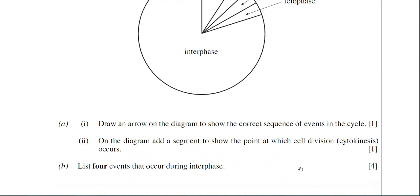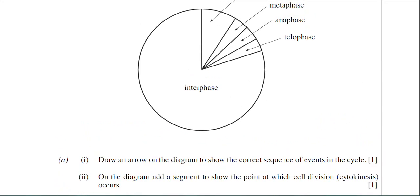Next, on the diagram add a segment to show the point at which cell division (cytokinesis) occurs. Well, cytokinesis occurs during the telophase stage. So we would draw a segment of the same size as the telophase just after it. And just for good measure I would label that as well - cytokinesis, although it should be obvious because it's the segment you've added.